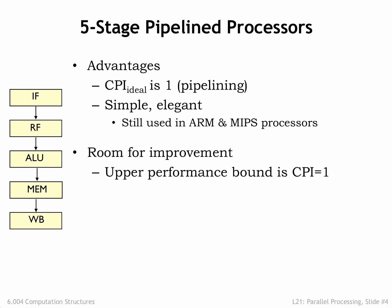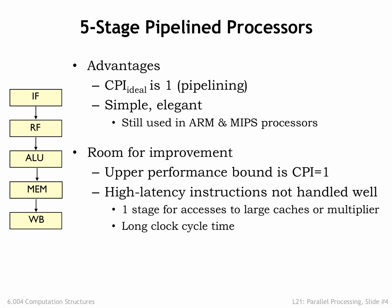There is room for improvement. Since each stage is working on one instruction at a time, CPI ideal is one. Slow operations — for example, completing a multiply in the ALU stage, or accessing a large cache in the IF or MEM stages — force t-clock to be large to accommodate all the work that has to be done in one cycle.